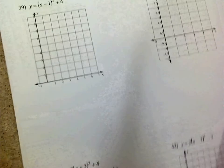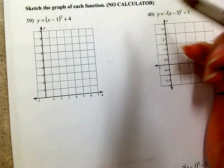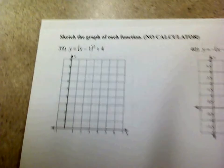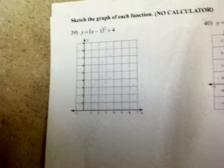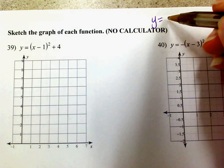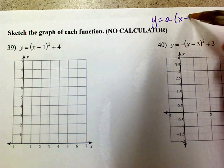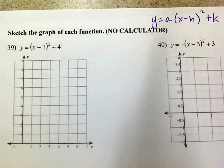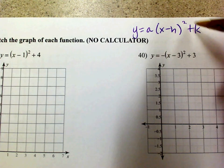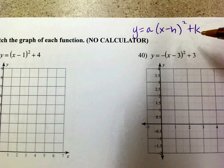All right, now let's look at 39. Number 39 says sketch a graph of the function, and I want to see if you can do it without a calculator. As far as graphing a quadratic, I know you've graphed a quadratic, but I don't know if you necessarily remember standard or vertex form. When we're talking about vertex form, you're talking about y equals a times (x minus h) quantity squared plus k.